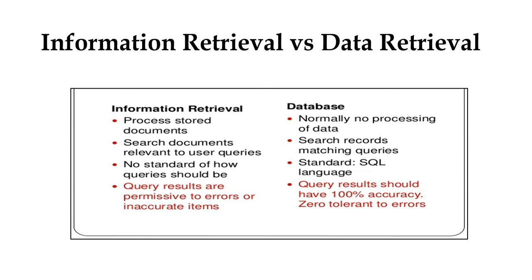Let's look into the difference between information retrieval and data retrieval. Data retrieval focuses on data stored in a database in the form of records on a table. To process a table we require a query language, preferably SQL, and when we query using SQL the result is 100% accurate. In information retrieval we do not use any query language, and so the result will not be 100% accurate. This is the key difference between information retrieval and database retrieval.